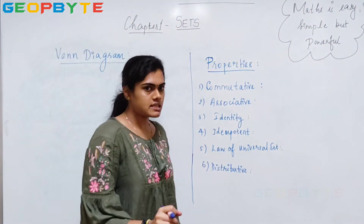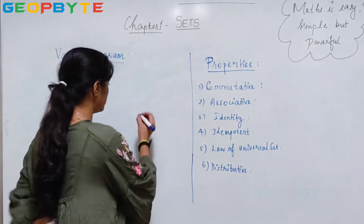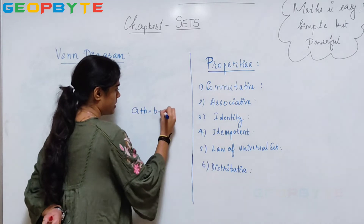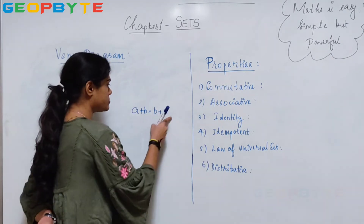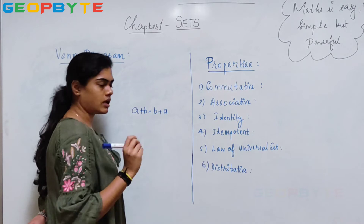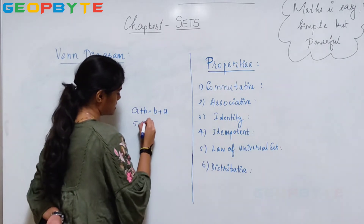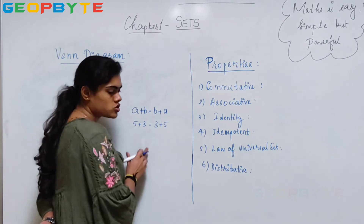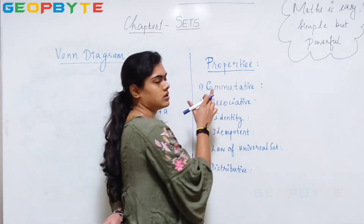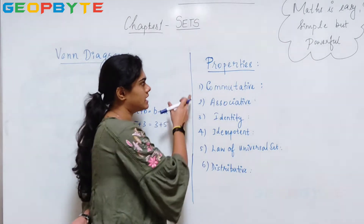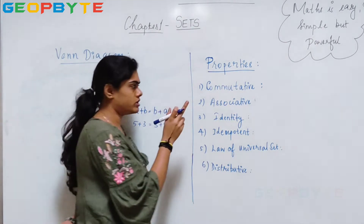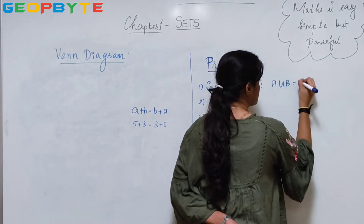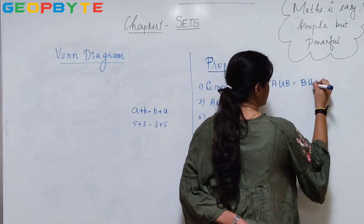So there are properties in sets, just as in numbers we know that A plus B equals B plus A — this is what we call the commutative property in numbers, that is 5 plus 3 equals 3 plus 5, either way. So like this we have properties in sets also. The first one is the commutative property: A union B is equal to B union A.